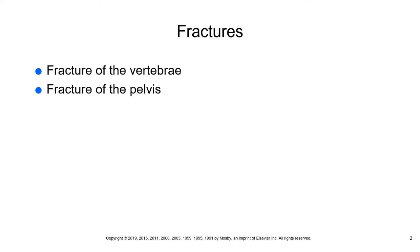A displaced vertebral fracture can place pressure on or actually sever the spinal cord nerves, causing permanent paralysis from the point of injury downward. For example, an injury at L2 can leave a patient paralyzed from the waist down. Displaced fractures are particularly dangerous because they can permanently sever the spinal cord nerves.